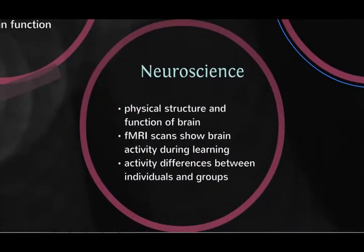The Learning Sciences include components of neuroscience, which is the study of the physical structures and functions of the brain. Functional Magnetic Resonance Imaging, or fMRI scans, are used to show which areas of the brain are active during different tasks. Different areas and levels of activity may be present in different individuals, depending on the task and even the culture of the learner.